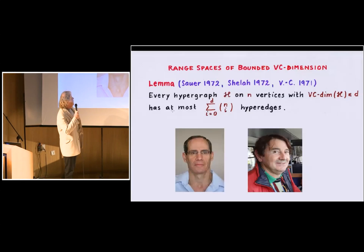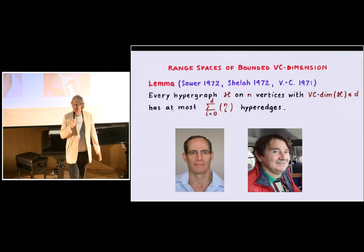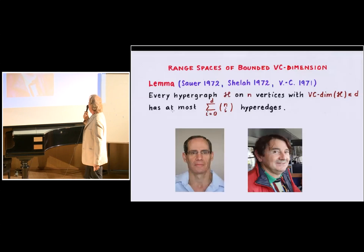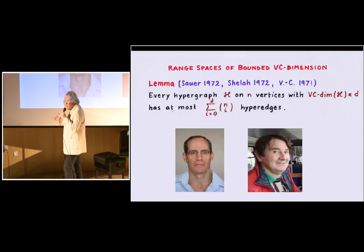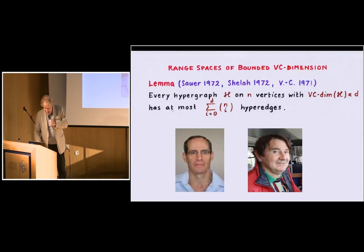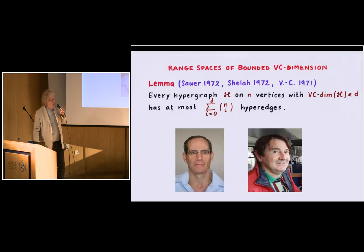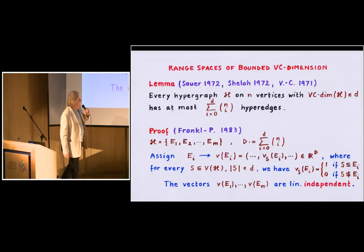It's a beautiful statement. The statement says that if you have a hypergraph on N vertices, and the VC dimension is D, then the maximum number of hyperedges that it can have is the sum of the binomial coefficients, N choose I, where I goes from 0 to D. Which can be attained, of course, because if you have all at most D-element subsets of an N-element set, then this is exactly the number of hyperedges that it has, and of course it doesn't contain any shattered subset of size D plus one. So why are these two pictures here? The first picture, Noga's picture, is not here just because it is his birthday, but apparently the simplest induction argument to prove this lemma is due to him.